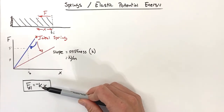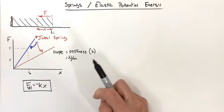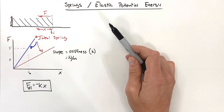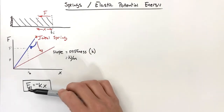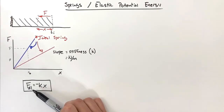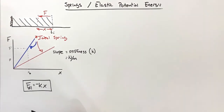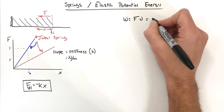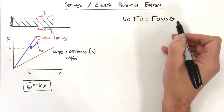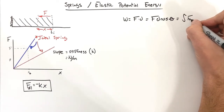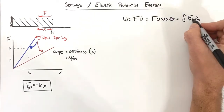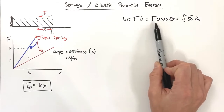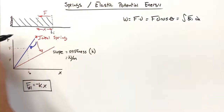So F = −kx is the actual equation for the force by an ideal spring. We're discussing this force in the context of energy because this force is a function of position — and that's important. Going back to our definition of work: work is F·d·cosθ, or in the calculus version, the integral of F(x)dx. If we push the spring to the left, the spring pushes back to the right following F = −kx.